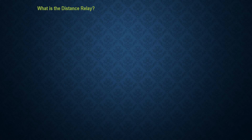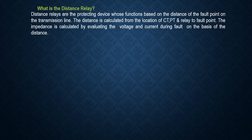What is a distance protection relay? Distance relays are protecting devices whose function is based on the distance of the fault point on the transmission line. The distance is calculated from the location of the relay up to the fault point, and the impedance is calculated by evaluating the voltage and current during the fault.